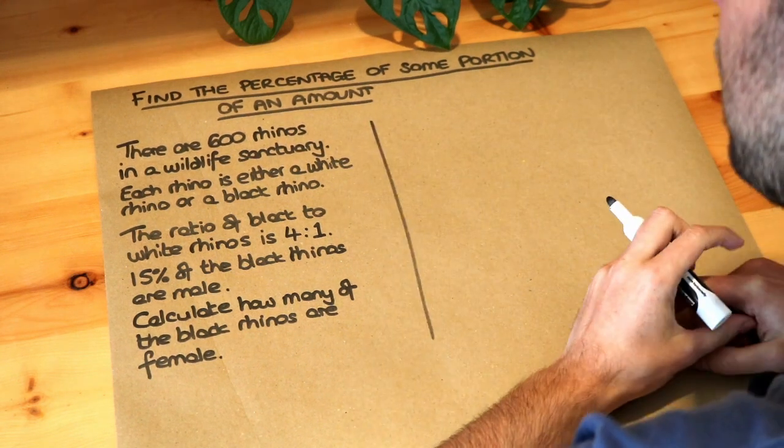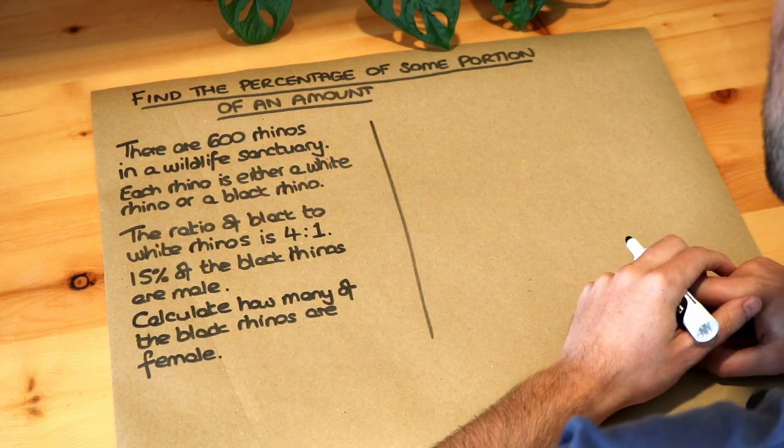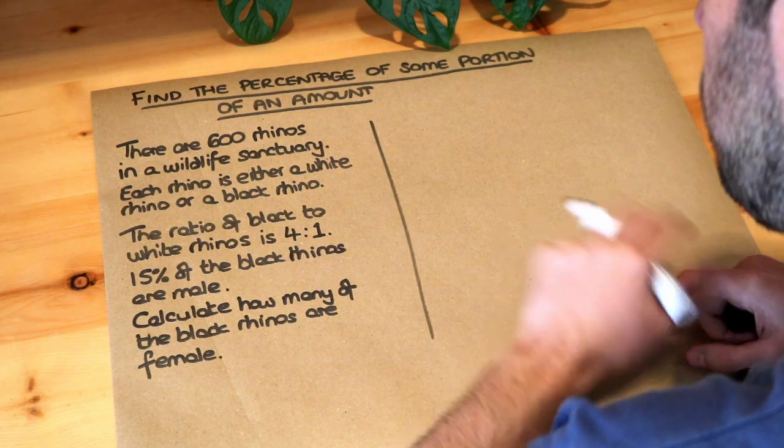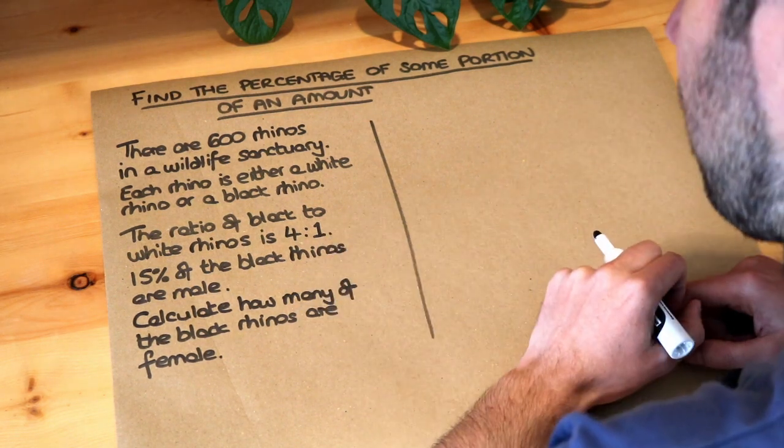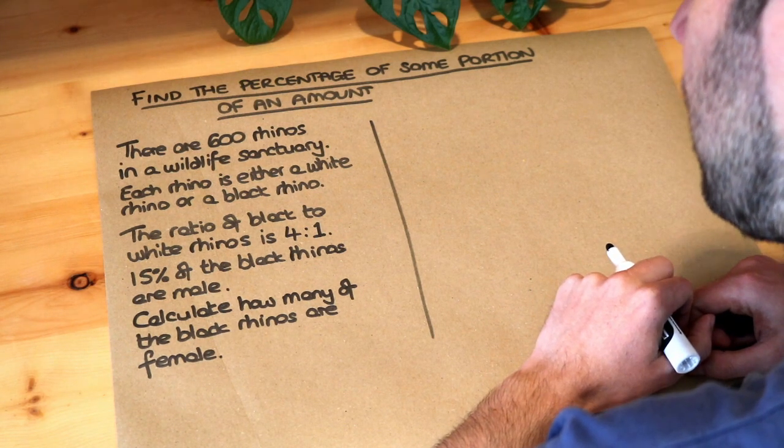There are 600 rhinos in a wildlife sanctuary. Each rhino is either a white rhino or a black rhino. The ratio of black to white rhinos is four to one. 15% of the black rhinos are male. Calculate how many of the black rhinos are female.